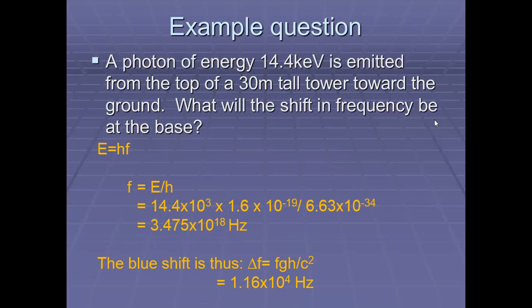Here's a question here. So if a photon of energy 14.4 kiloelectron volts, as used in the example, from the top of the tower but now 30 meters tall towards the ground, what will be the shift in frequency at the base?